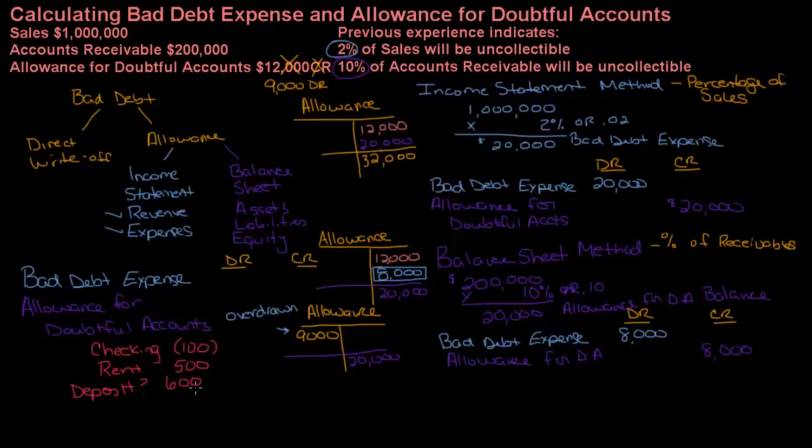Same thing here: nine thousand overdrawn plus the twenty thousand needed, so my bad debt expense is twenty-nine thousand. My journal entry would be debit bad debt expense twenty-nine thousand, credit allowance for doubtful accounts twenty-nine thousand. I hope that was helpful — if you have any questions leave them in the comments and I'll make sure I answer them.